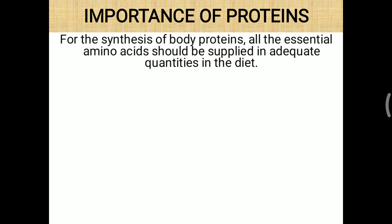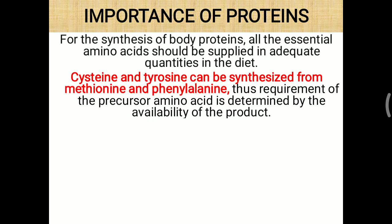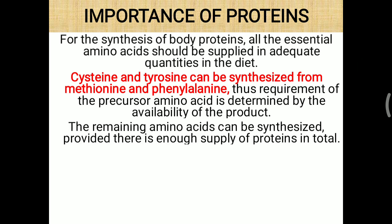For the synthesis of body protein, all the essential amino acids should be supplied in adequate quantity in the diet. Whenever protein is synthesized, all amino acids — essential, non-essential, and semi-essential — are needed. Cysteine and tyrosine can be synthesized from methionine and phenylalanine. Thus, the requirement of the precursor amino acid is determined by the availability of the product. If cysteine and tyrosine are not present, the requirement of methionine and phenylalanine is further increased. Non-essential amino acids can be synthesized provided there is enough total protein supply.